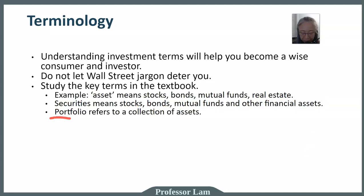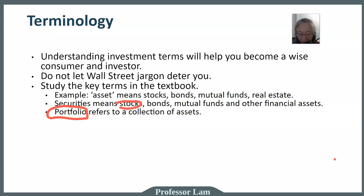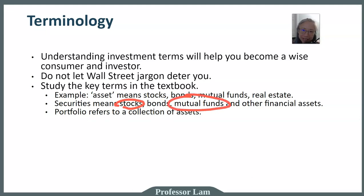In addition to individual securities, we oftentimes talk about a portfolio. A portfolio simply means that you have more than one thing in there. If you have two stocks, you have a portfolio. If you have a stock and a bond, you have a portfolio. If you have a stock and a mutual fund, you have a portfolio. So a portfolio is just a collection of more than one investment.